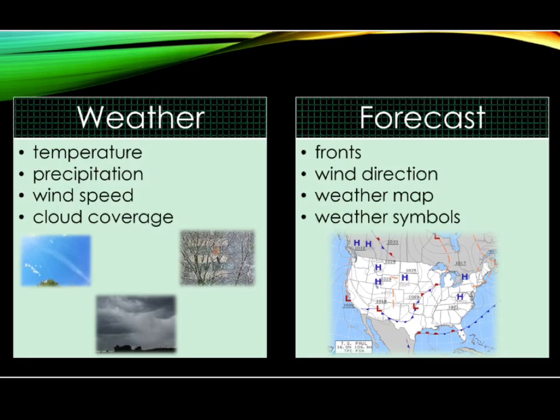Weather is a condition of the atmosphere that includes temperature, precipitation, wind speed, and cloud coverage. Forecasts can be displayed on weather maps containing special weather symbols. The main components of forecasts include all of the components of weather, but also include information about fronts and wind direction.